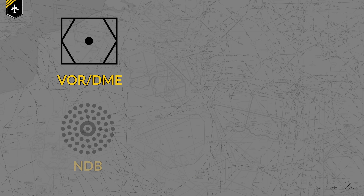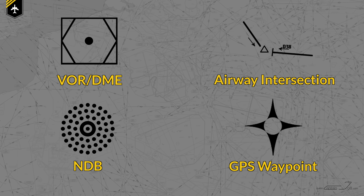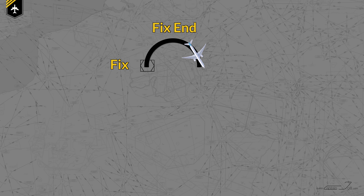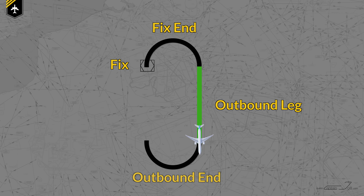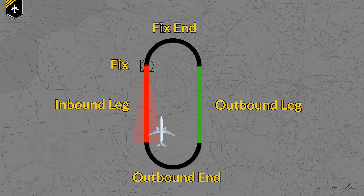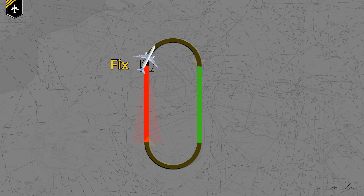A typical holding pattern is based on the holding fix. The fix can be any kind of navigational aid — a stationary point such as a VOR, an NDB, an airway intersection, or a GPS waypoint. Starting at the holding fix, the racetrack is made out of four components: the fix end with a 180-degree turn, the outbound leg, the outbound end, and the inbound leg back to the holding fix. A standard holding is flown with right turns unless otherwise specified by the air traffic controller.